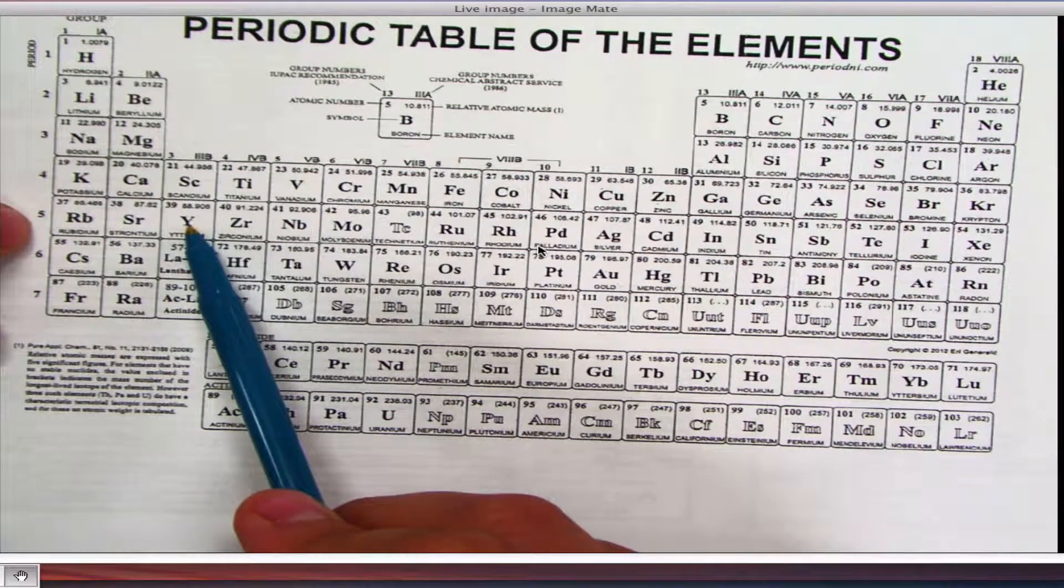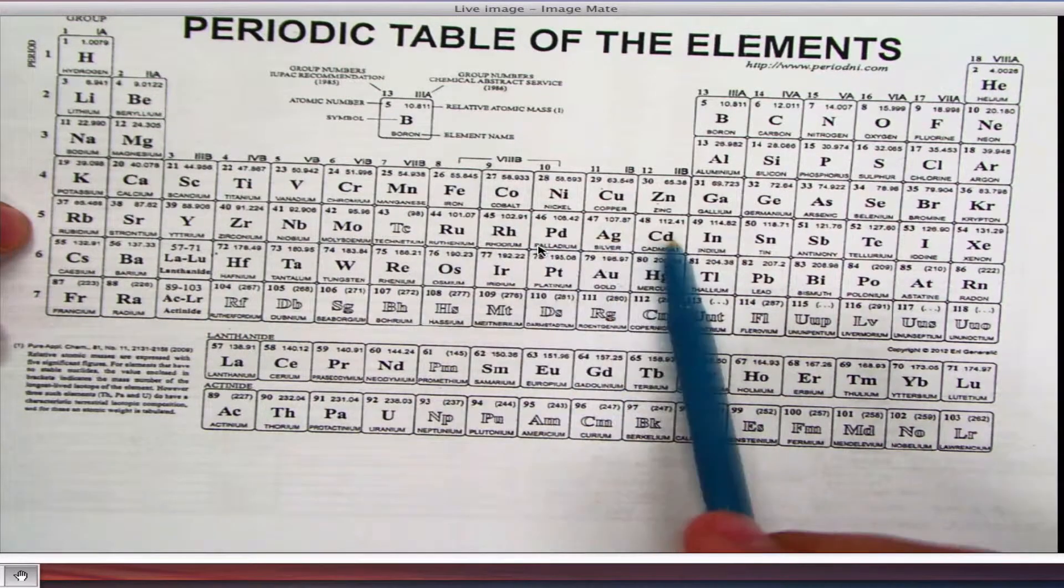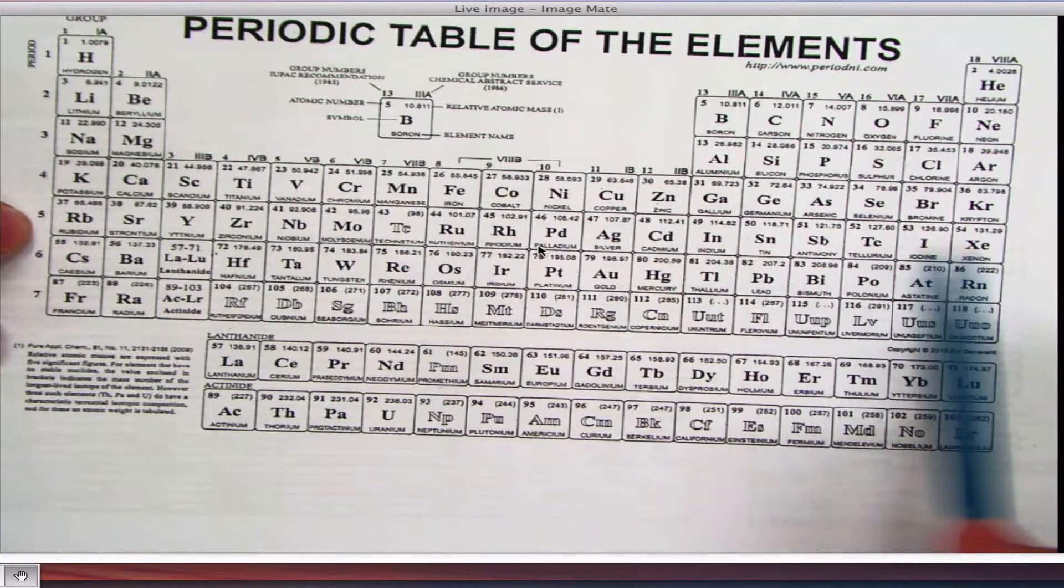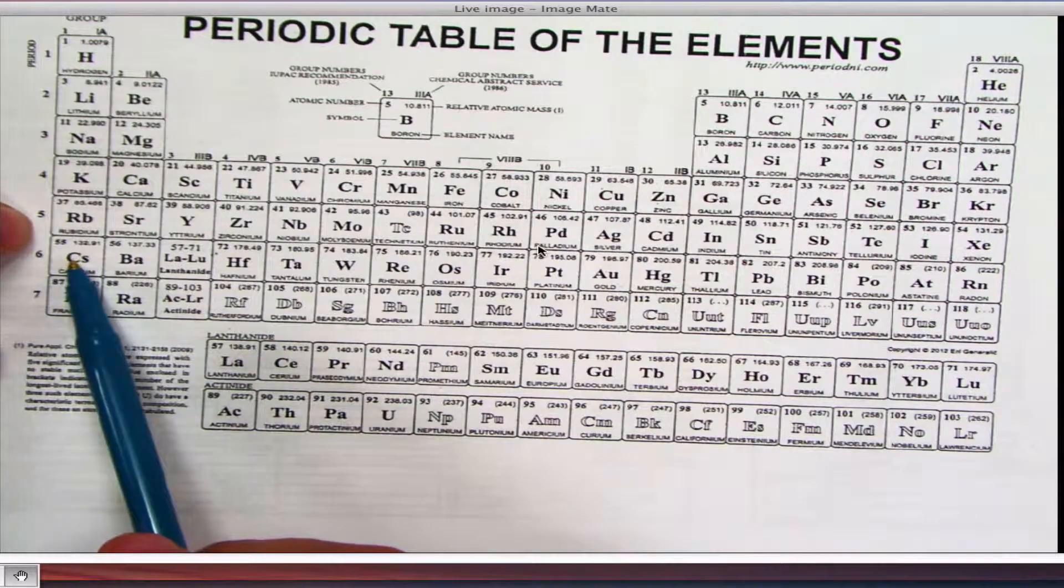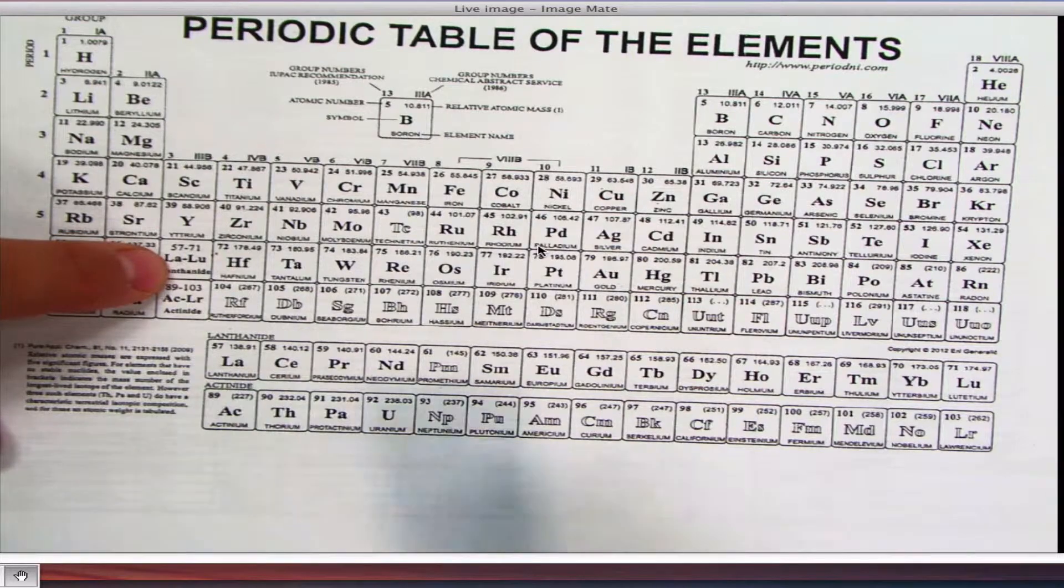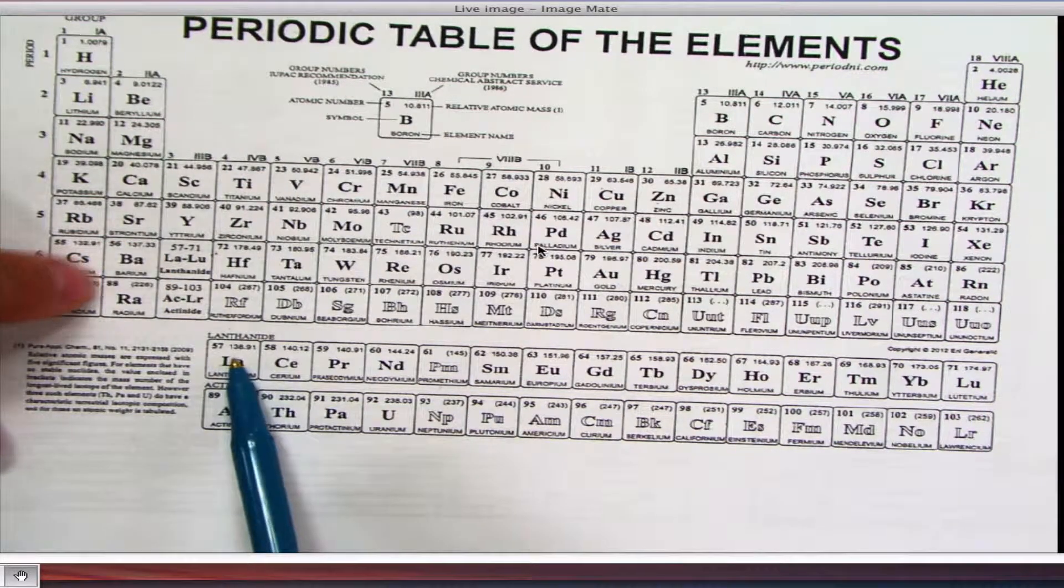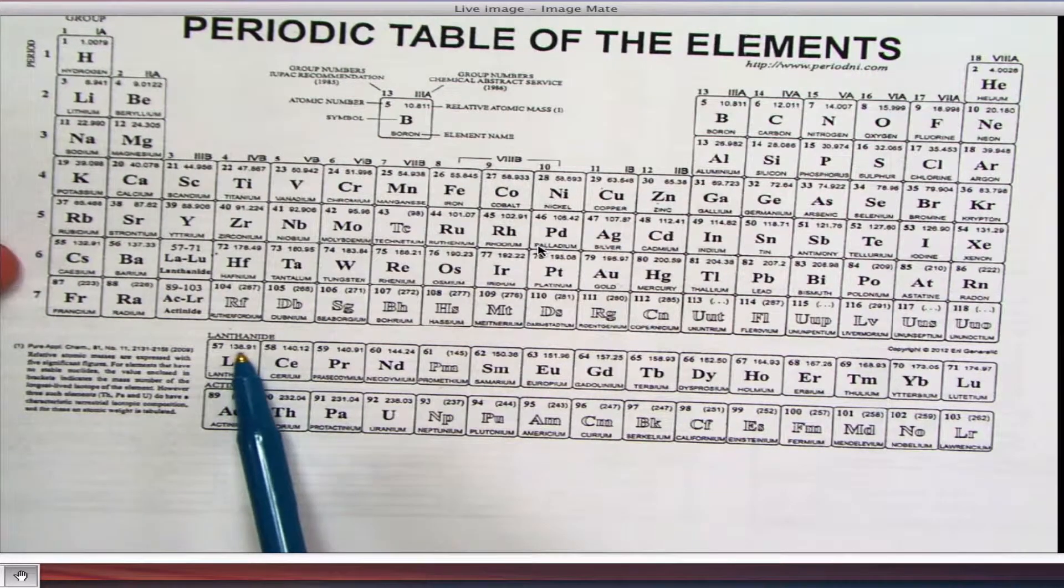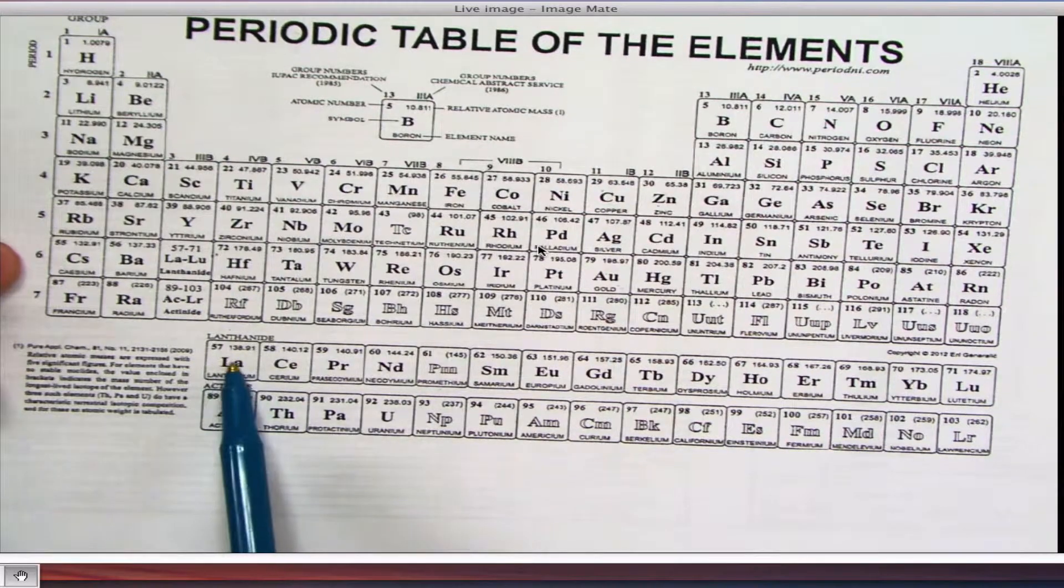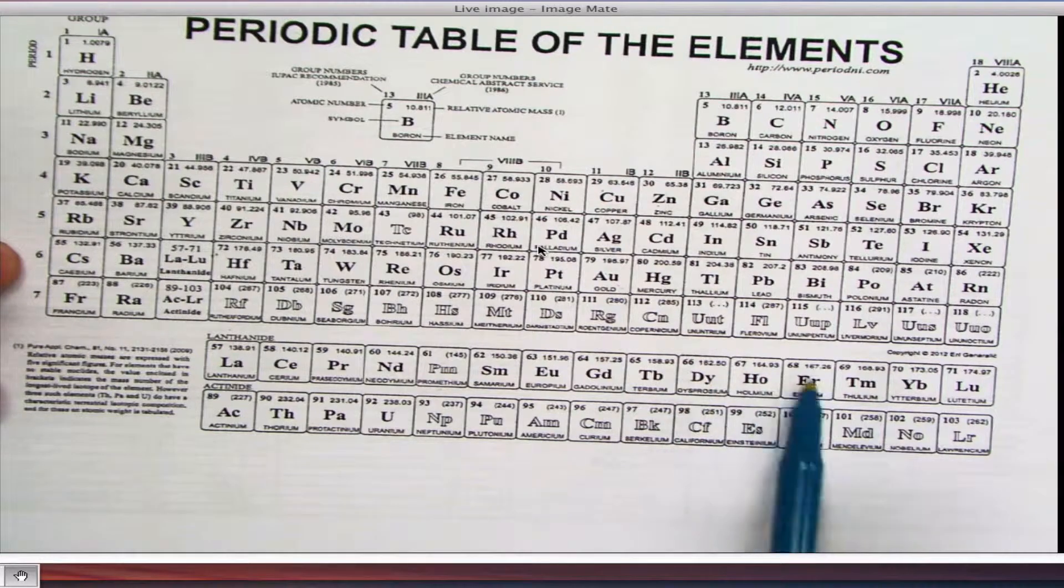Now we go back a row, because we're inner-D, 4D1, 2, 3, 4, 5, 6, 7, 8, 9, 10. Now we go back to the 5Ps, 5P1, 2, 3, 4, 5, 6, 6S1, 6S2. Now, this group, if you notice, this is this whole row right here, which you have to go through. These are your Fs. And when you're Fs, you go back 2 from whatever row you're in. So if I'm in row 6, I go to 4. So this is going to be 4F1, 2, 3, 4, 5, 6, 7, 8, 9, 10, 11, 12, 13, 14.